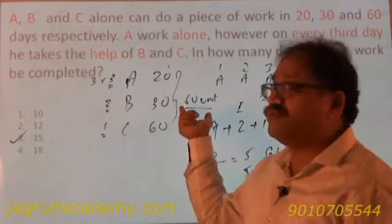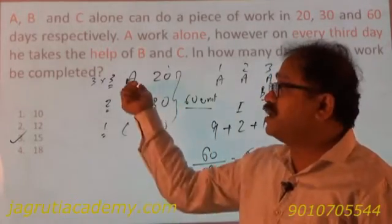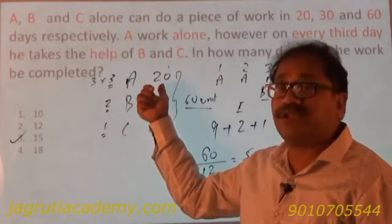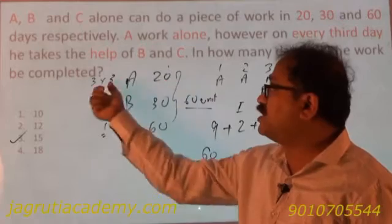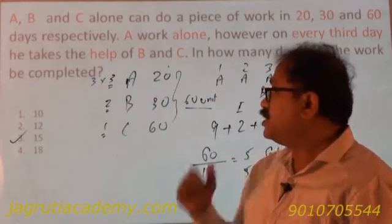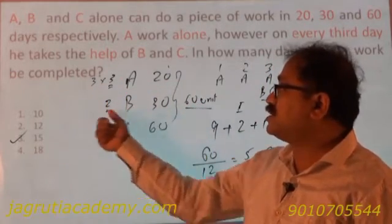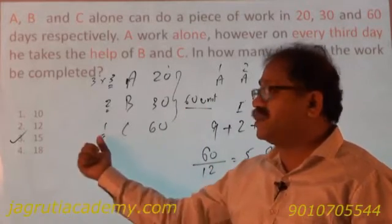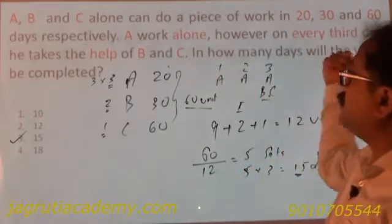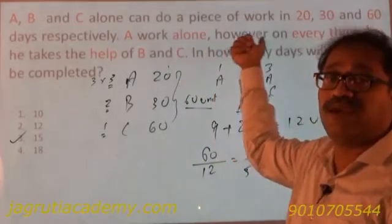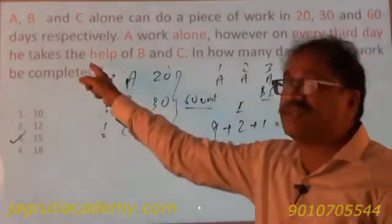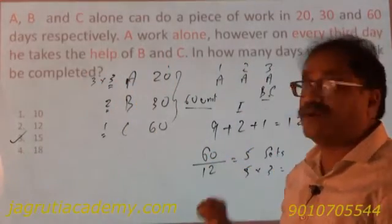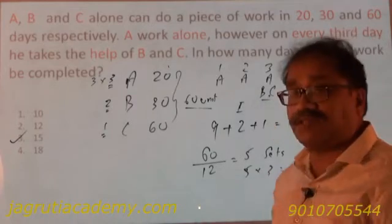A can complete 60 units in 20 days, so in 1 day A does 60 by 20 which is 3 units. Similarly for B, 60 by 30 is 2 units per day. For C, 60 by 60 is 1 unit per day. As given, A alone works, however every third day he takes the help of B and C. So the first day A works, second day A works, third day A works along with B and C.